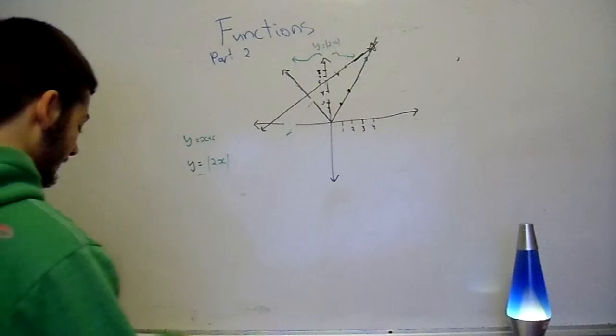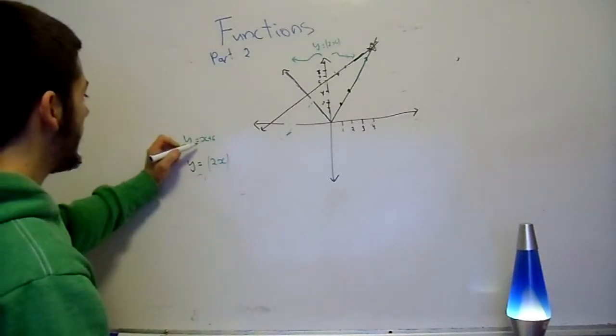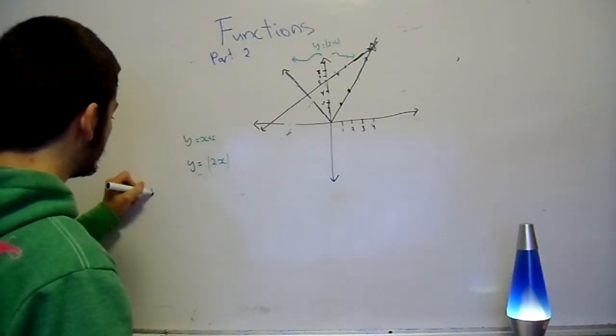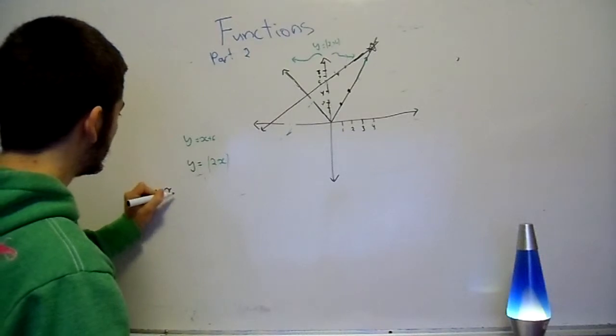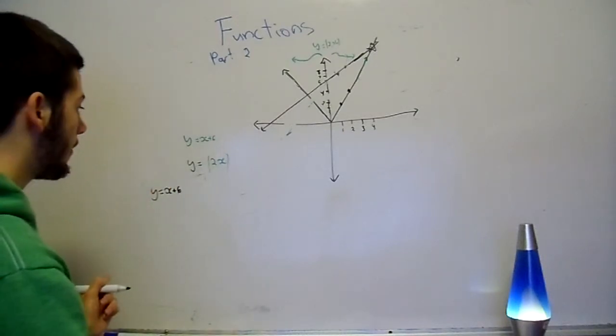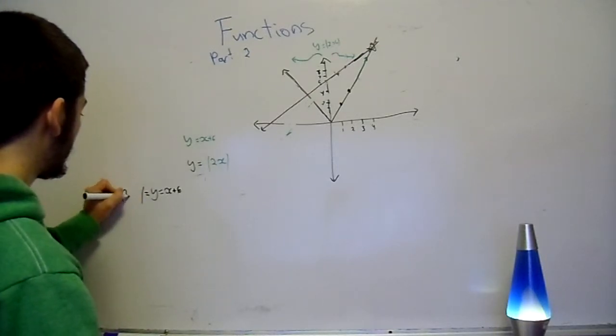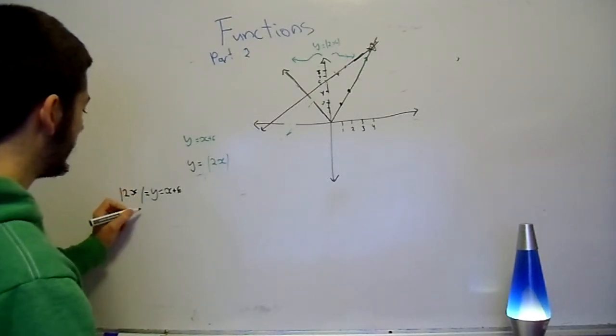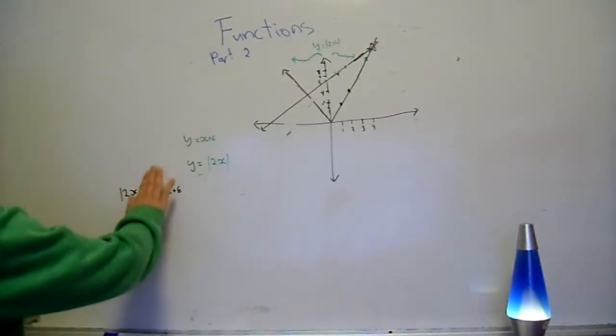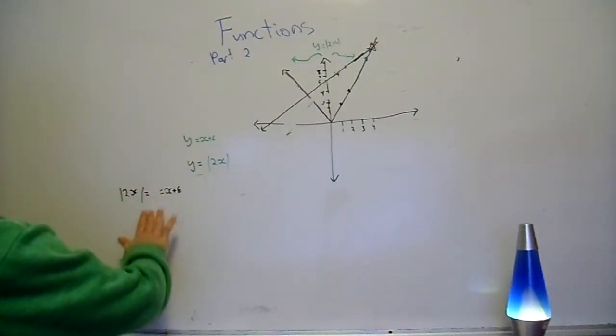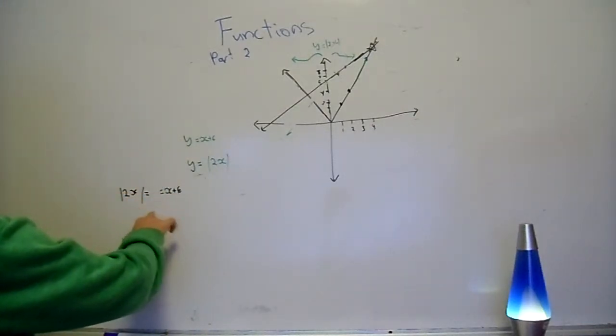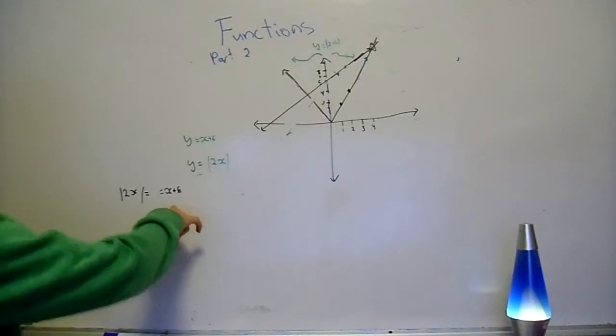Alright, okay, first off, y equals x plus 6. But y also equals 2x. That's an absolute value. Okay? So we can just take out the y here. And absolute value 2x is equal to x plus 6.